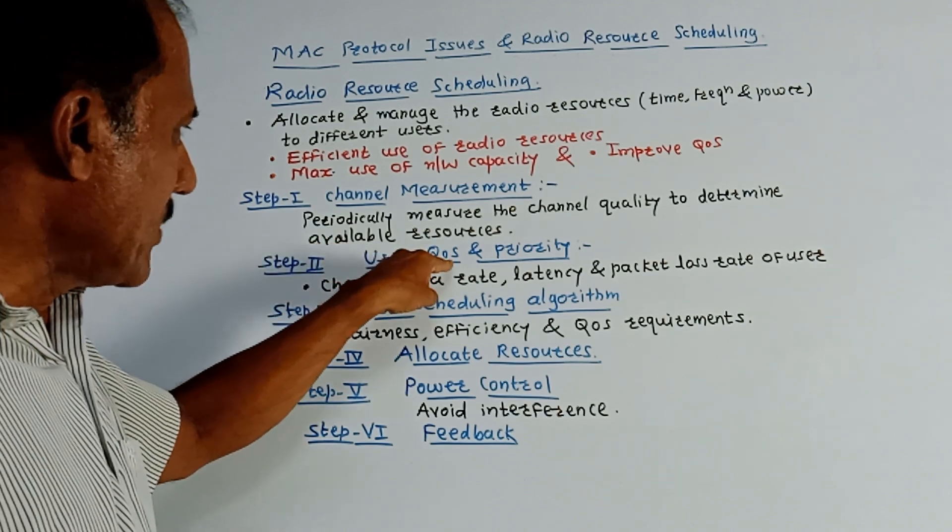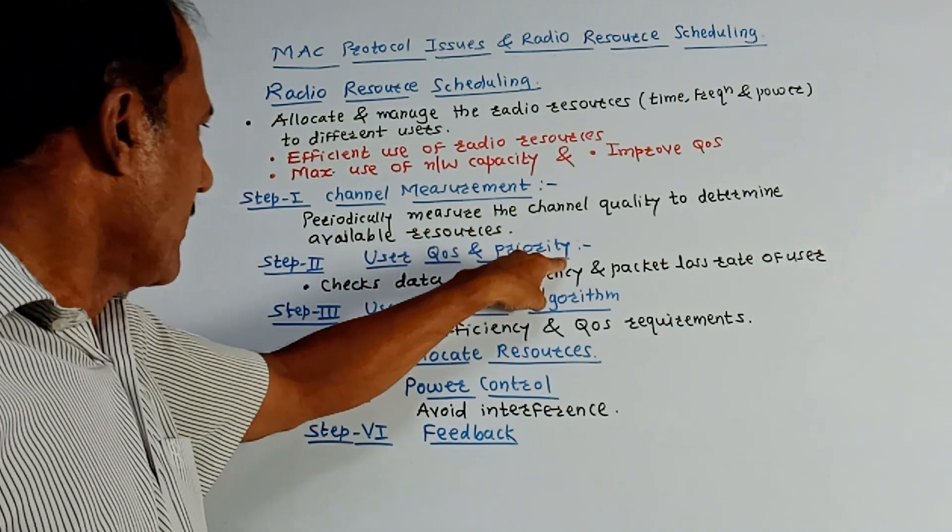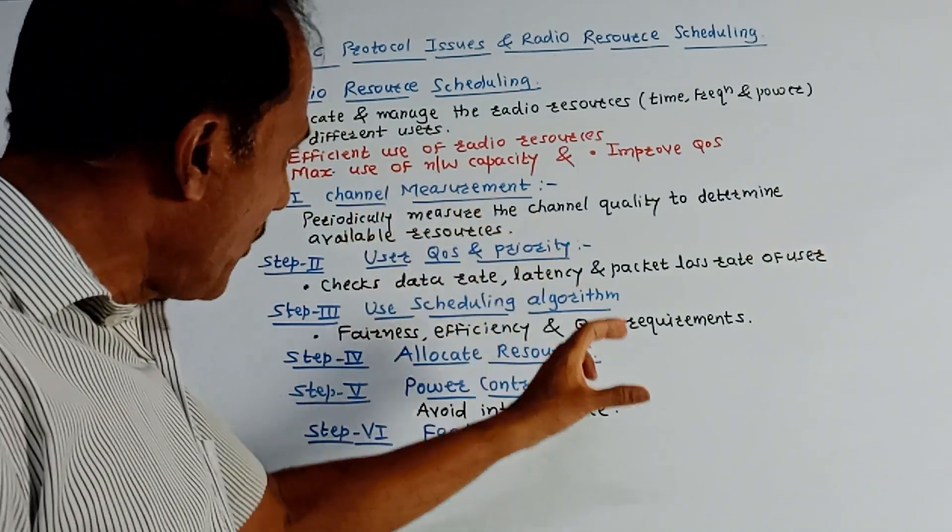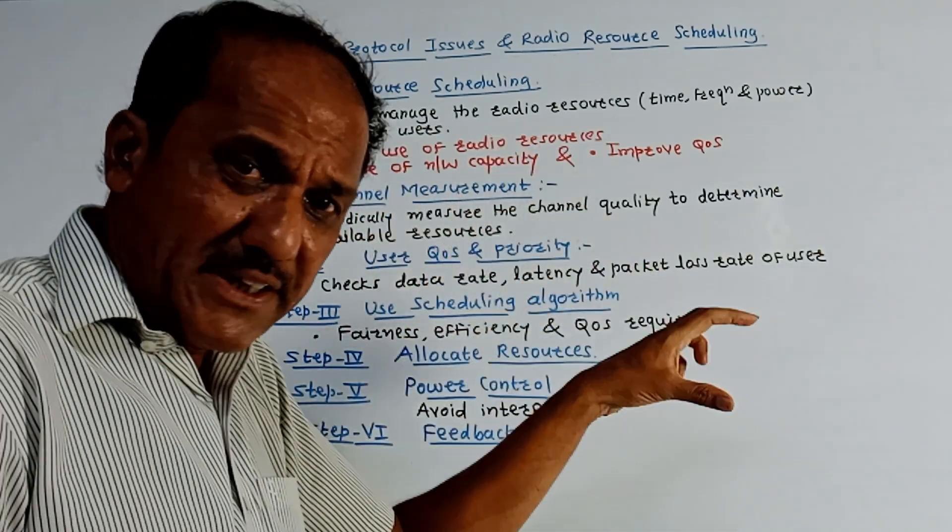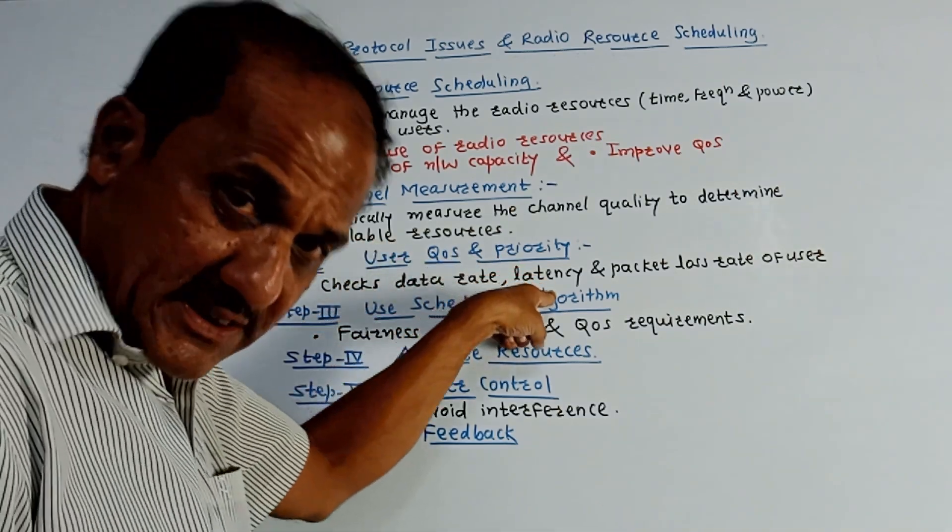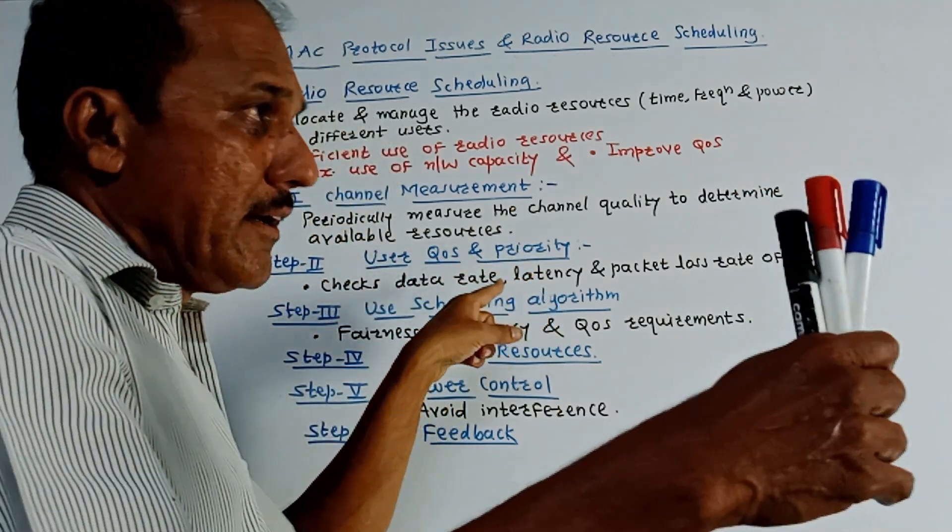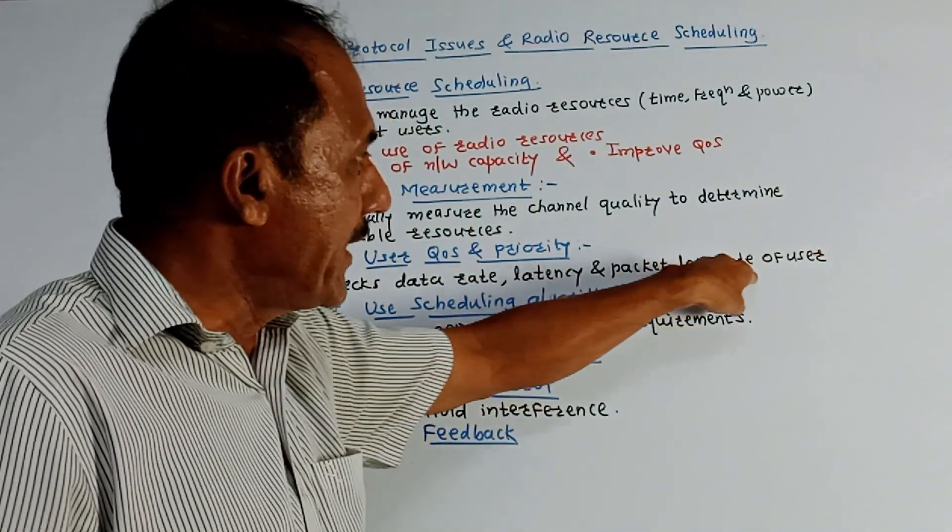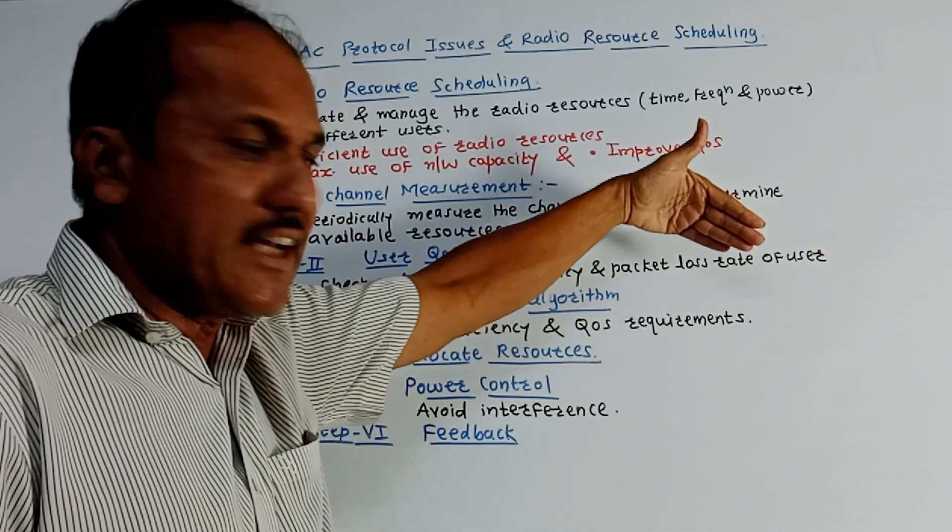Step 2: user quality of service and priority. Every time it is checked what is the priority of a user and what is the expected quality of service. So it checks data rate, latency—we have discussed this part, latency is the delay between transmitted and received signal—and packet loss rate of the user, and then decide the scheduling.